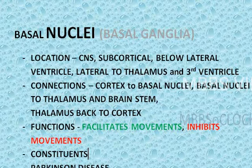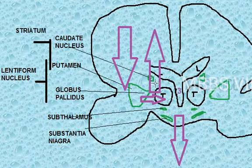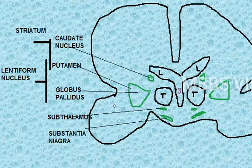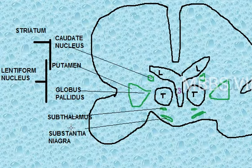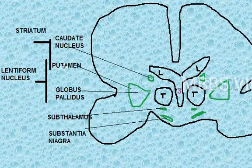What are the constituents of basal nuclei? For that, you have to look at this diagram. The constituents of basal nuclei are: the caudate nucleus, this entire triangle is the lentiform nucleus — in the lentiform nucleus you have the globus pallidus and the putamen — then you have the subthalamus and the substantia nigra. So the five names are: caudate nucleus, putamen, globus pallidus, subthalamus, and substantia nigra.